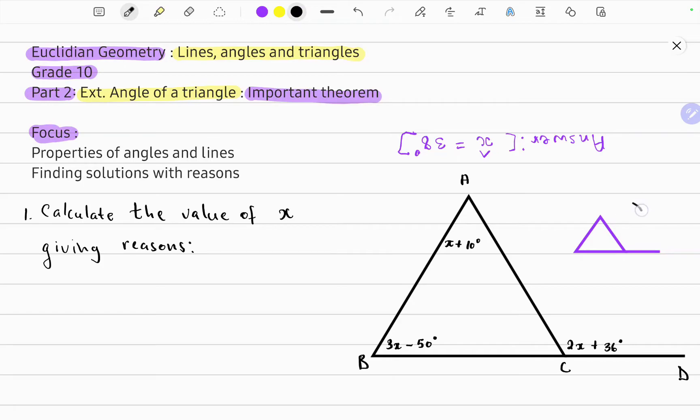So if we have a look at this triangle, what this theorem states is that the angle on the outside, the exterior angle, is equal to the sum of the two interior opposite angles.